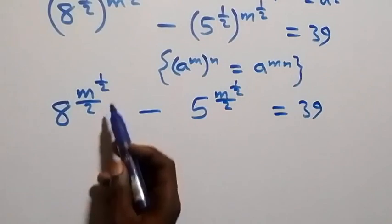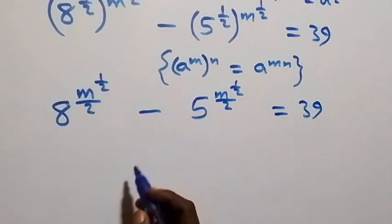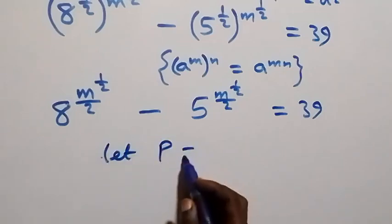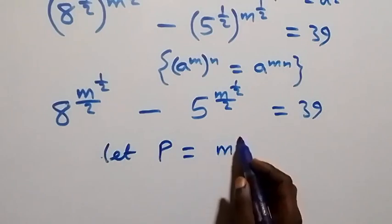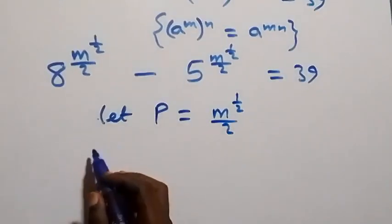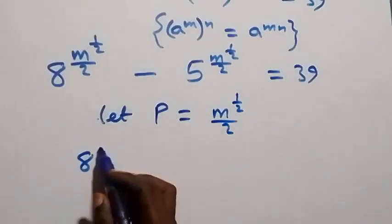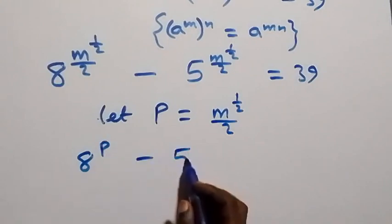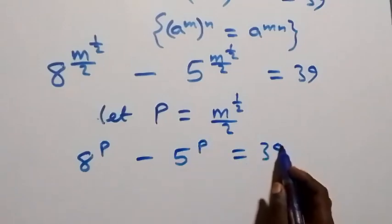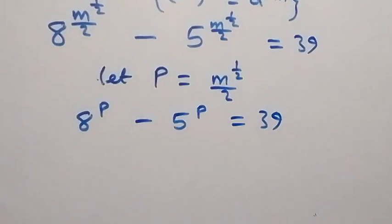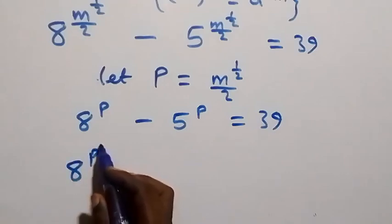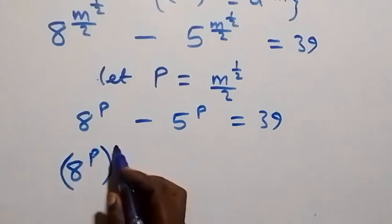Since we have m raised to power half over 2, we can use a substitution letter. Let p equal m raised to power half over 2. Then this equation becomes 8 raised to power p minus 5 raised to power p equals 39.